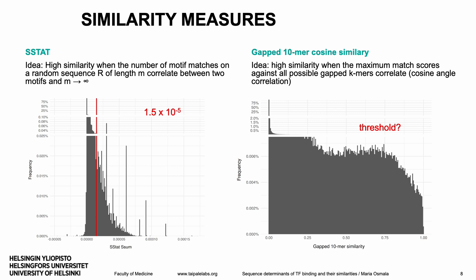The idea behind the EstStat similarity score is that two motifs are highly similar when the number of motif matches on a random sequence correlate between the motifs, and the length of the random sequence approaches infinity. In contrast, capped k-mer cosine similarity considers two motifs highly similar when the maximum binding affinity scores against all possible capped k-mers correlate with each other. To use capped k-mer cosine similarity as a distance measure in the minimum dominating set analysis, the similarity threshold is yet to be defined.